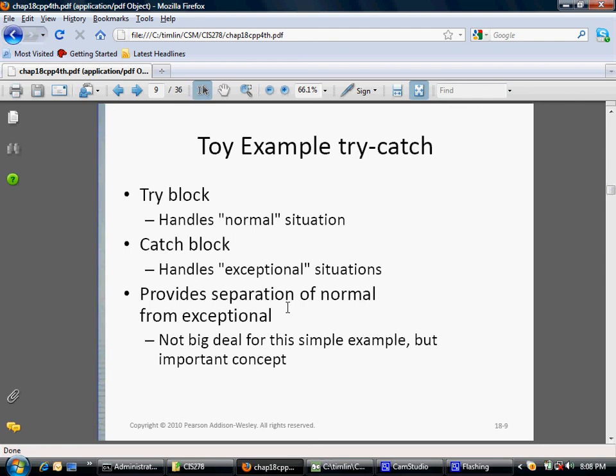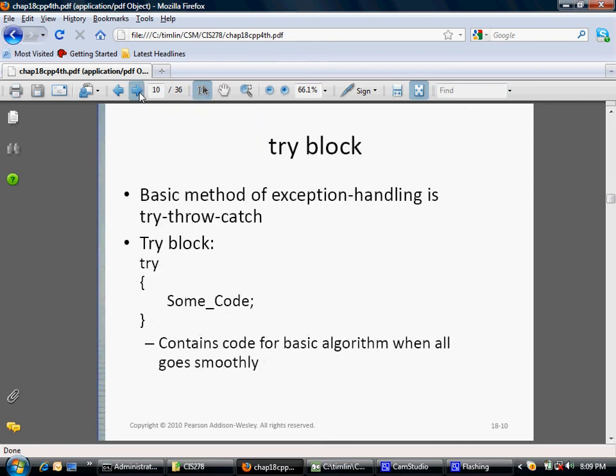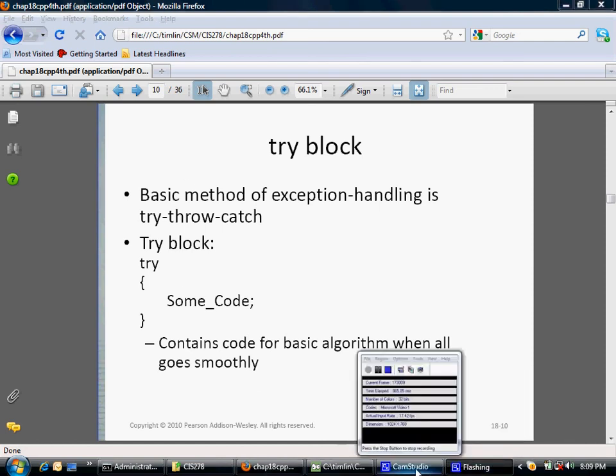I think this is a good way to organize the code. Even though there's that structured issue, I still think try-catch blocks are a good thing to use. It's not a big deal for this simple example, but important concept later on. You can have a lot of different types of exceptions. Being able to organize the exception code like that, I think makes the program very readable. And even structured, more structured in some ways. I definitely think it's a good thing to do. The basic concept of an exception handler is try, throw, catch. The try area has all the normal code and contains code for the basic algorithm.